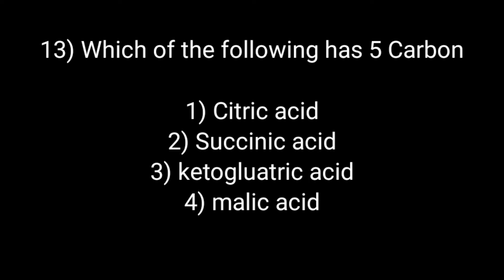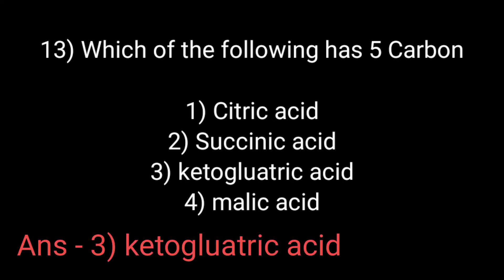Which of the following has 5 carbons? Option first: citric acid. Option second: succinic acid. Option third: alpha-ketoglutaric acid. And option fourth: malic acid. The correct answer is option third: alpha-ketoglutaric acid.